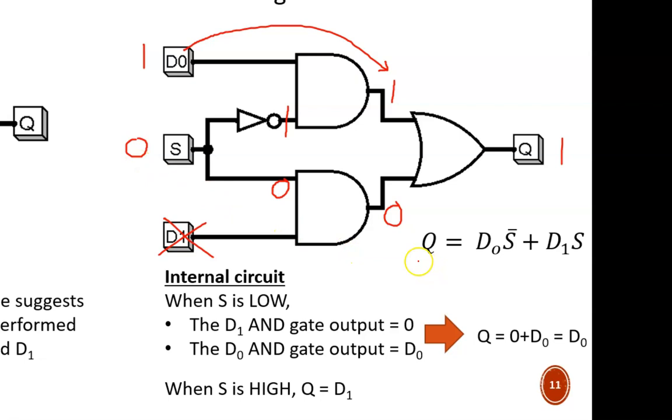This logic is summarized nicely in the Boolean equation as well. If S equals 0, then this product term on the right must be 0, regardless of the D1 value. And the equation simplifies to simply Q equals D0.